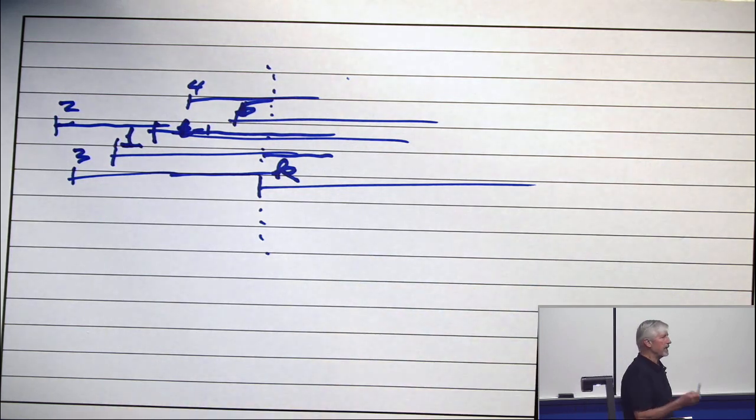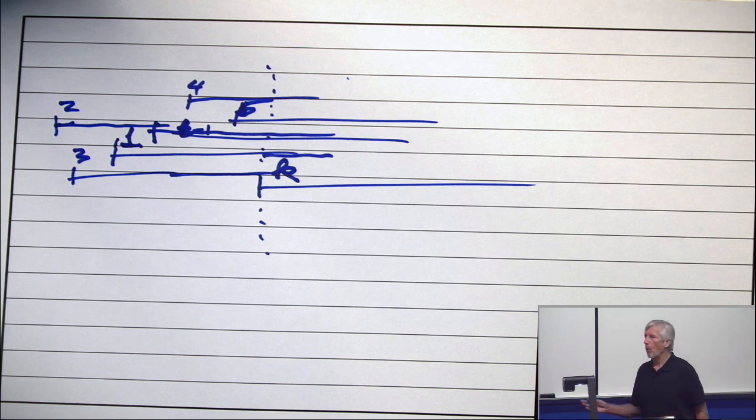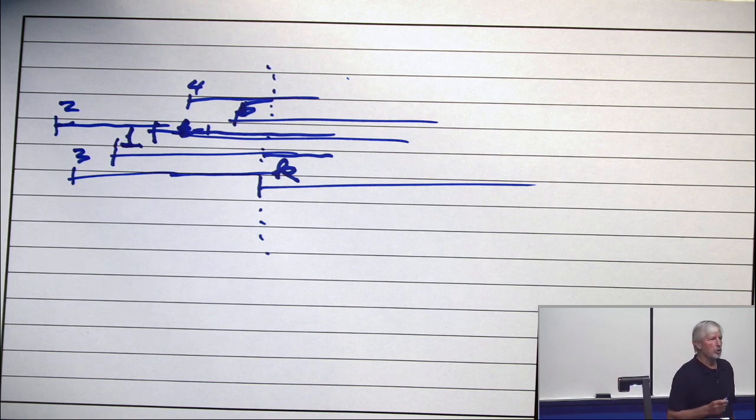So anytime you have a family of intervals, if you color it using first fit in the order left to right of the endpoints, the largest color you will use is the clique size.